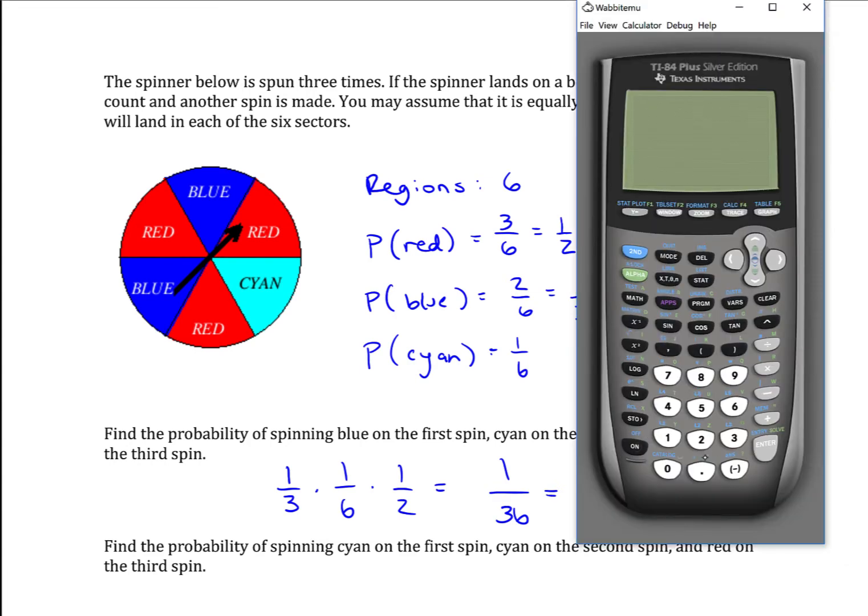If we make that a probability, one over 36 is 0.028.